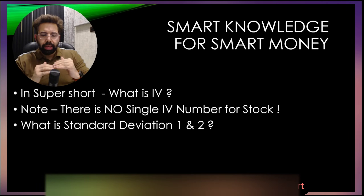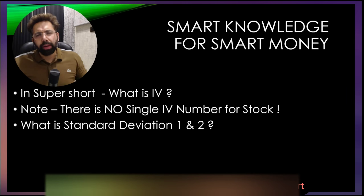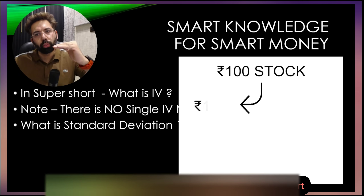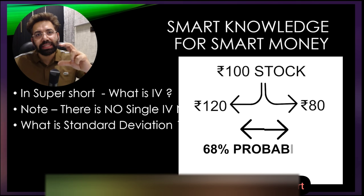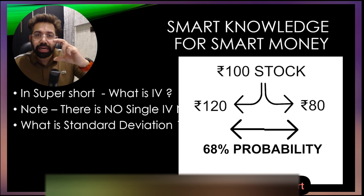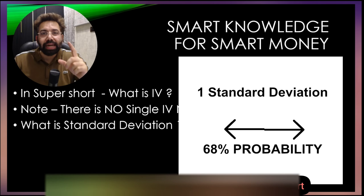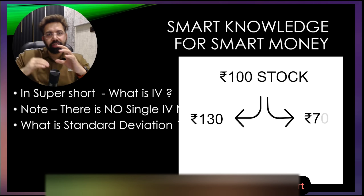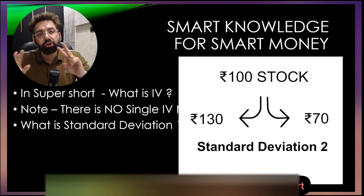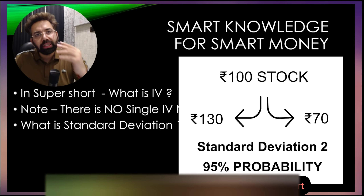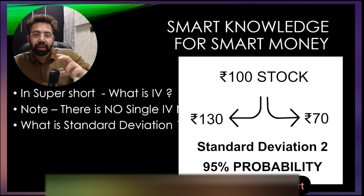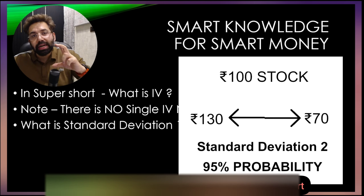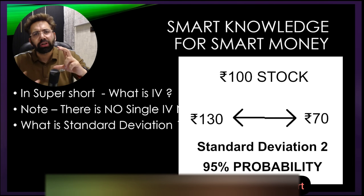What is standard deviation 1 and standard deviation 2? There are free tools available for this. For example, a 100 rupee stock can go to 120 or 80 — that is a 68% probability, which is one standard deviation. If the stock goes to 130 and 70, that is standard deviation 2, meaning there is a 95% chance the stock will remain between 130 and 70. The range is wider with 95% probability.